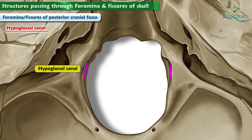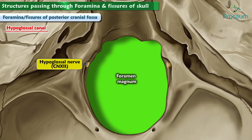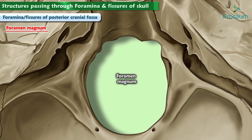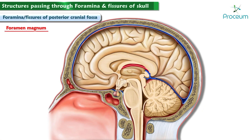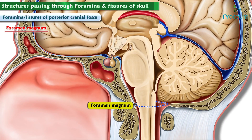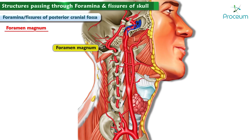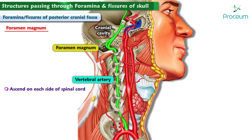The hypoglossal canal is quite near to the foramen magnum and allows passage of the twelfth cranial nerve, the hypoglossal nerve. The foramen magnum — whose name in Latin means 'great hole' — has to be relatively large to allow the lower end of the brainstem and the upper end of the spinal cord to pass through. Importantly, the foramen magnum also allows the vertebral arteries to enter the cranial cavity; these vertebral arteries ascend on each side of the spinal column and enter the skull to provide important vascular supply to the brain.